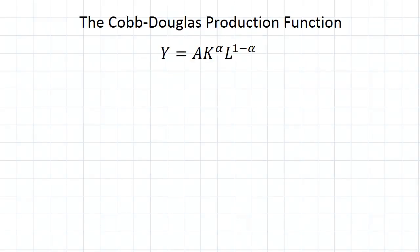So the Cobb-Douglas production function has this form. We say GDP is equal to state of technology times capital to the power of some figure alpha times labor to the power of 1 minus alpha.